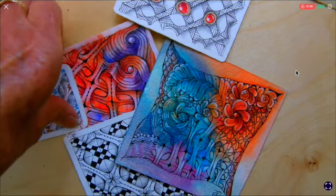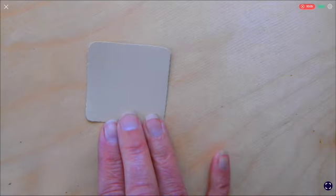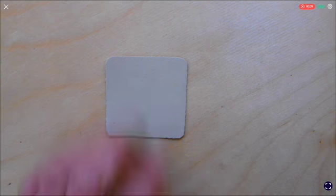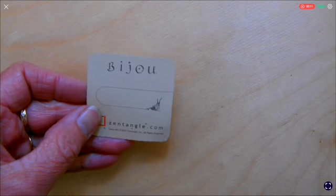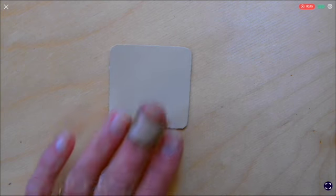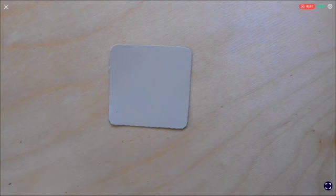So let's get started. The materials we're going to use today are a small bijou tile. This is from Zentangle.com. It's called Bijou, a teeny tiny tile much smaller than what we're used to working on. It's only 2 inches by 2 inches square.